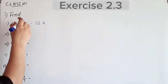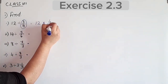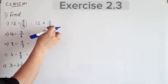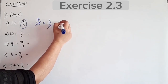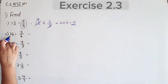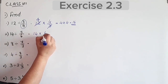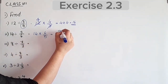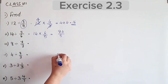For division, we use multiplication with the reciprocal. 3/4 becomes 4/3. So 4 into 4 is equal to 16.